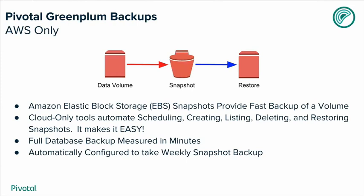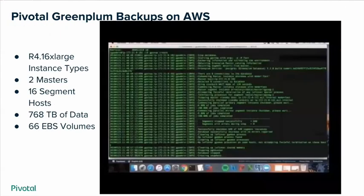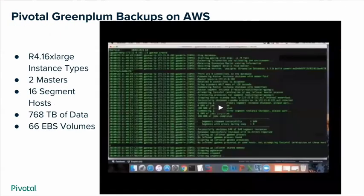It's all configurable — you can change the backup schedule after the fact. This backup process is shown for the big instance type, the R4.16xlarge, which is the largest in Amazon: two masters, 16 segment hosts, 768 terabytes of data across 66 EBS volumes.